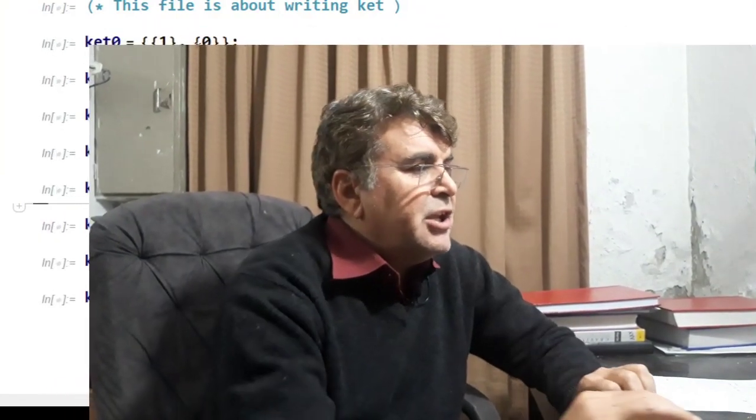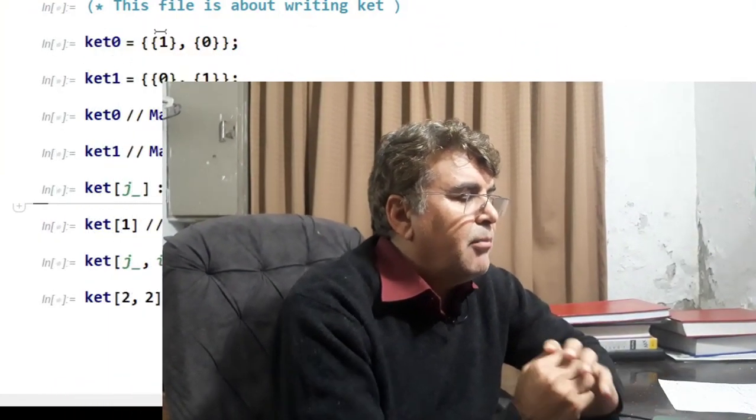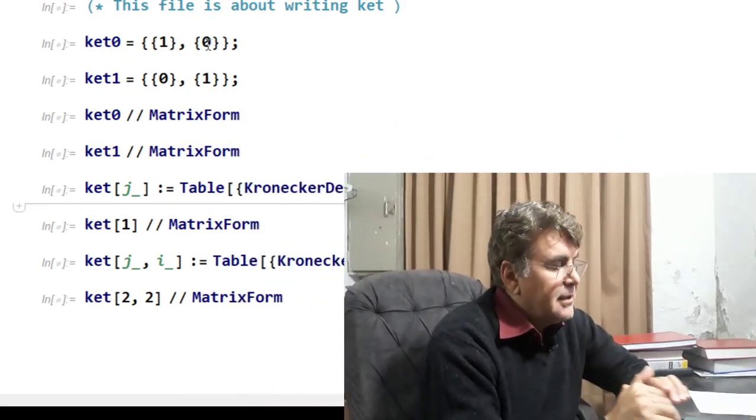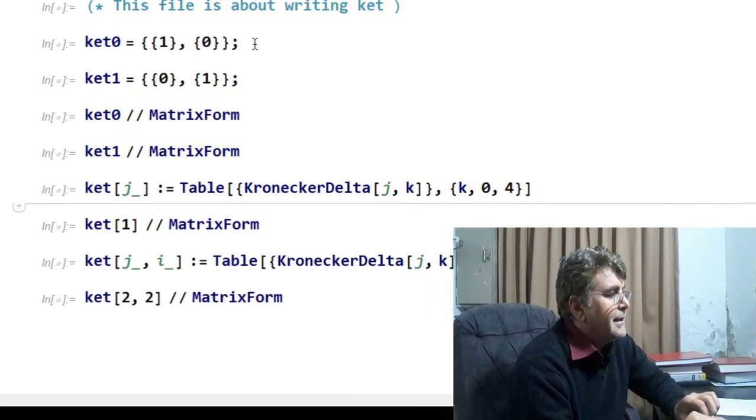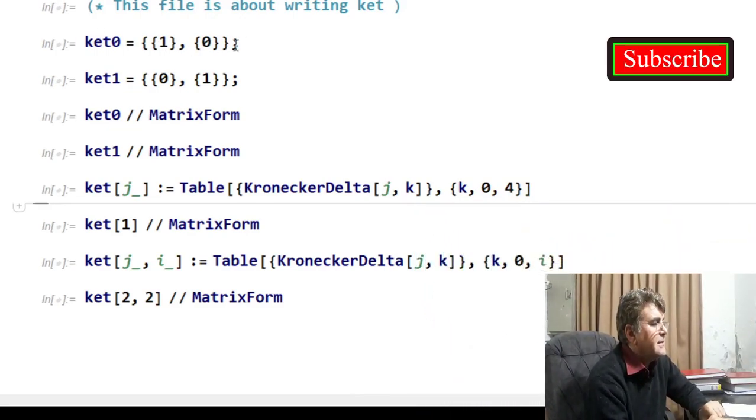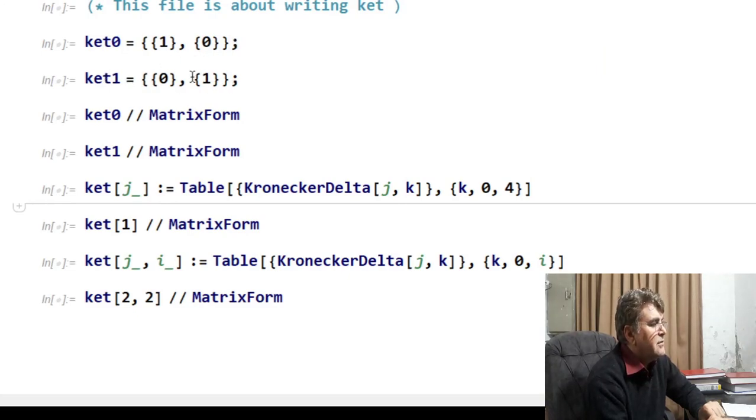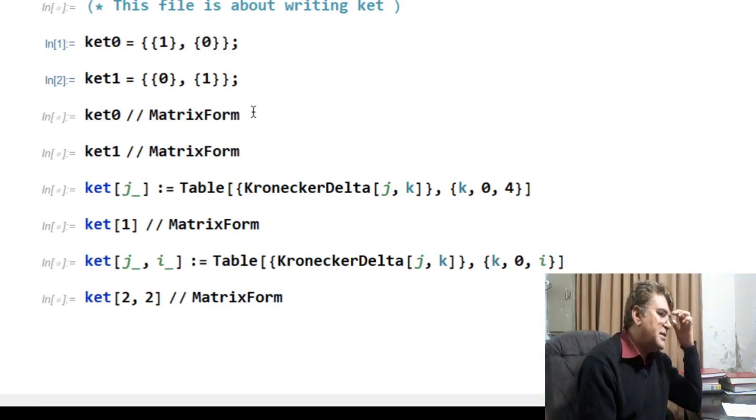So the two basis vectors for a qubit can be written in the form of two rows column matrices. One basis vector is called ket 0 and I have written it as a list of lists, where the first sublist gives the first row and the second sublist gives the second row. And similarly, ket 1 I have written as a list of sublists. The only difference between the two is the switching up into one. And now do we see whether these kets currently represent the basis vectors in the form of a column matrix.